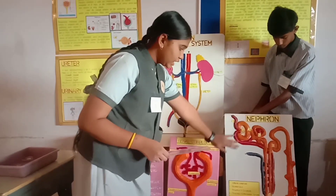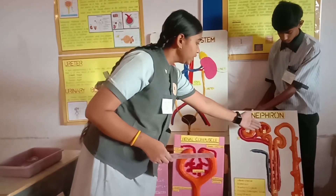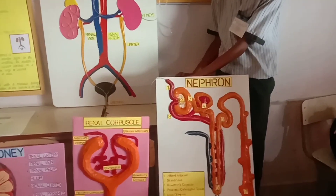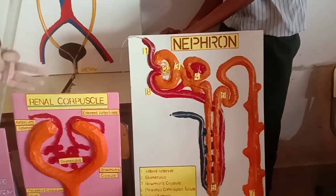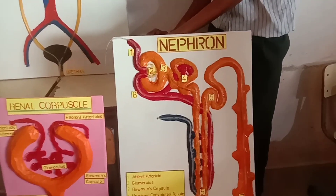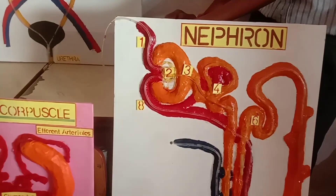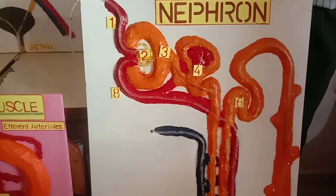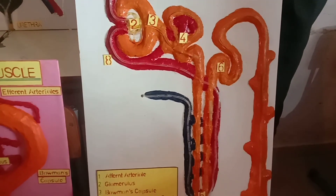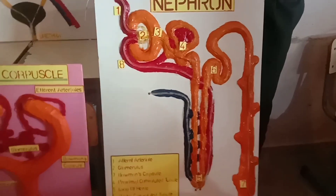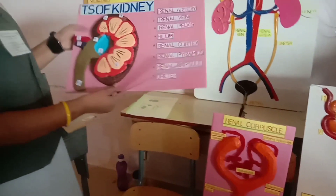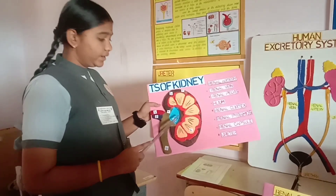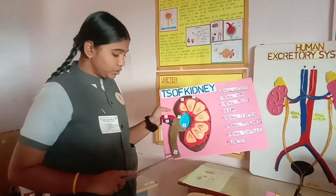Once the filtrate is reabsorbed, it moves into the next part where tubular secretion happens, where secretion of sodium, potassium and sodium-potassium ions takes place into the filtrate to maintain the acid-base balance and ionic balance in the body fluids. Once the urine is formed, it moves into the collecting duct, which carries the urine through the hilum and out through the ureter.